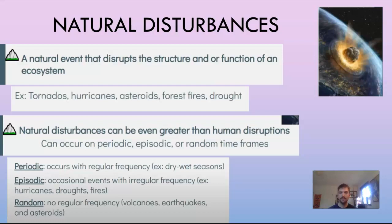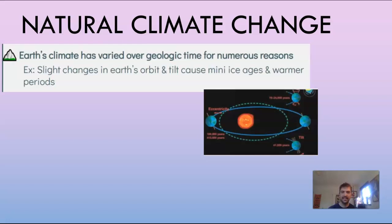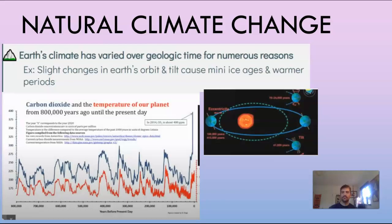One very important point is that there is natural climate change. Earth's climate has varied over geological time for numerous reasons — for example, slight changes in the Earth's orbit and tilt have caused many ice ages and warmer periods. Here we have a graph of the cycle of carbon dioxide over 800,000 years, and you can see it has gone up and down considerably. You can also see that temperature rose with the increase in carbon dioxide, showing that there is naturally a changing climate.